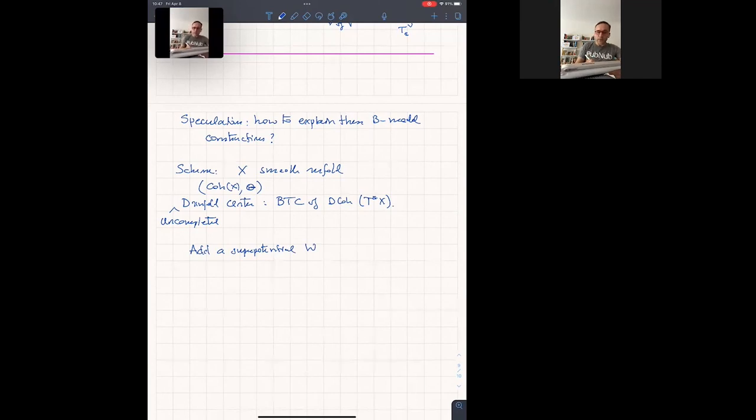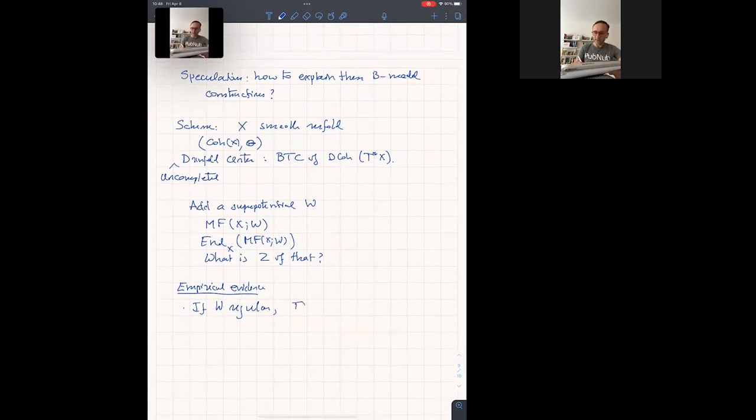And you would like to construct now, first of all, what's the boundary condition, the matrix factorization category of X with respect to W. And then MF over X, the tensor category of MF of X with respect to W. And you want to ask, what's the Drinfeld center of that? What is the center of that? And based on empirical evidence, if W is regular everywhere, it's the same cotangent bundle. Whereas, if W has singularities, you want to see something changes. There's a change at the singularity.